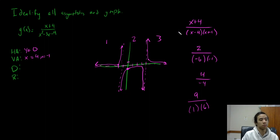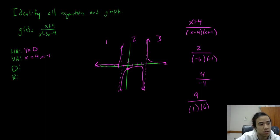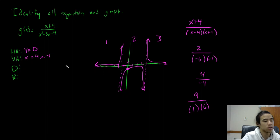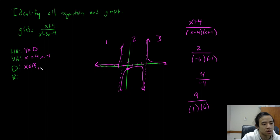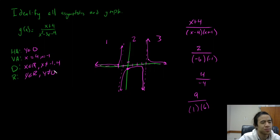This will be perfectly acceptable for my class. For the domain and range, it's just everything but the asymptotes. The domain is x is an element of the reals, but not equal to negative 1 or 4. The range is y is an element of the reals, not equal to 0.